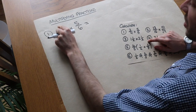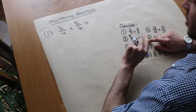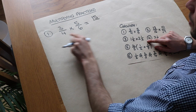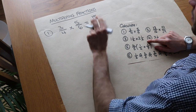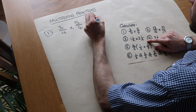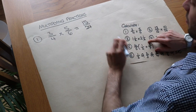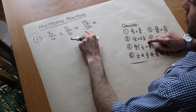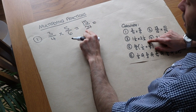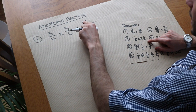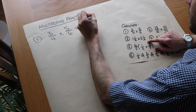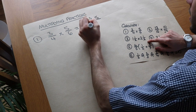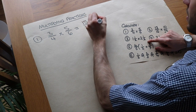So in this case we just multiply the numerators together and we get 15, and we multiply the denominators together: 4 times 6 is 24. Sometimes you can simplify it after — we can see 15 and 24 both divide by 3, so 15 divided by 3 is 5 and 24 divided by 3 is 8.